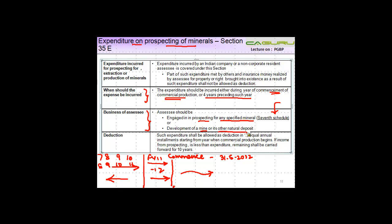And what is the deduction which will be allowed? So let's say you incurred 1000 as an expenditure, how much deduction will be allowed? Such expenditure shall be allowed as a deduction in 10 equal installments. So divide by 10 gives you 100, so you will get a deduction of 100 rupees.